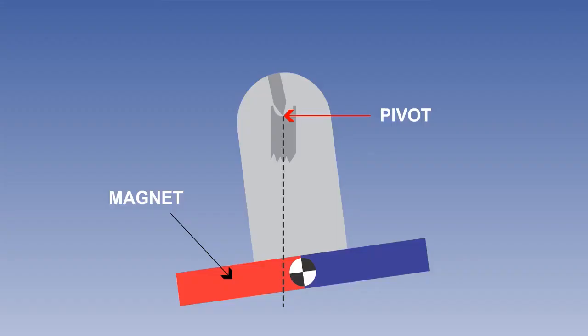Compass systems generally use a method of pendular suspension that ensures that the magnetic detector is as horizontal as possible, and is therefore more effective in sensing the horizontal component. This is discussed in more detail later.